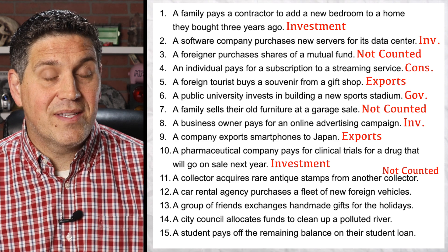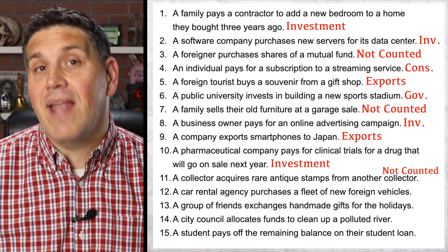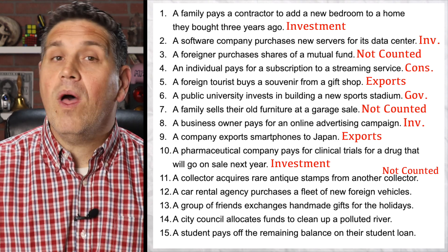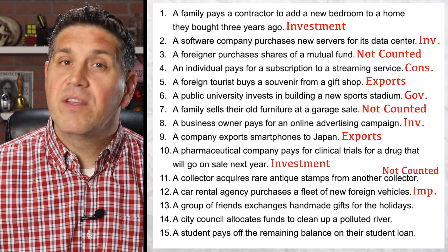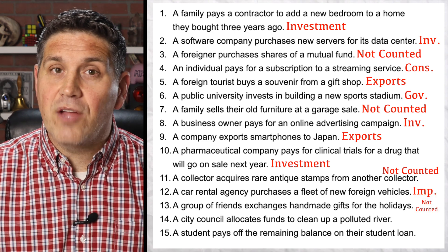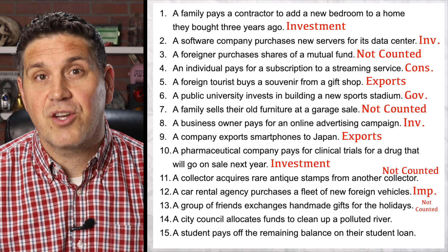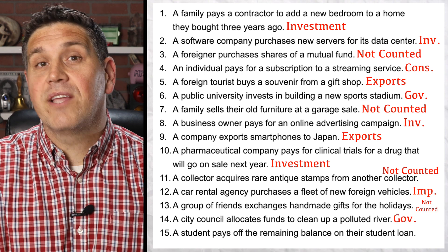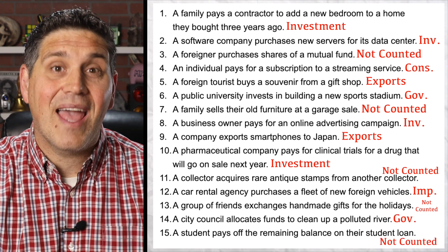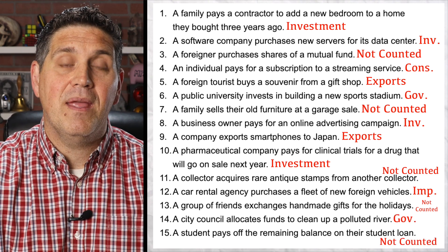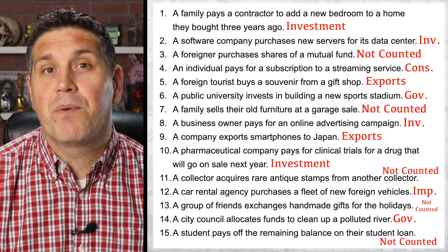Number eleven doesn't count in GDP — this is a used good, an antique stamp, basically an asset. Number twelve does count towards GDP, and since these are foreign cars, this is imports. Number thirteen doesn't count in GDP because that's considered household production. Number fourteen does count — that's government spending. And number fifteen does not count towards GDP; this is just someone paying off a debt, and nothing new is being produced.